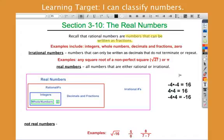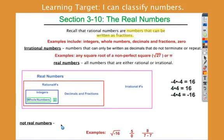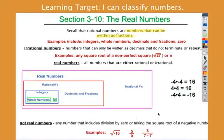So here's your definition for not real numbers — make sure you copy this down. Any number that includes division by 0, or if I take the square root of a negative number — those are the two ways I get not real numbers.